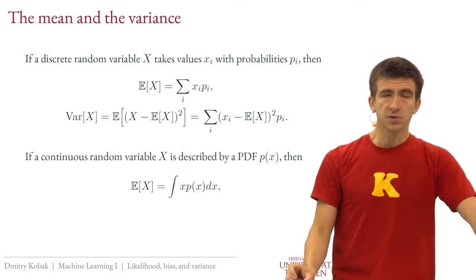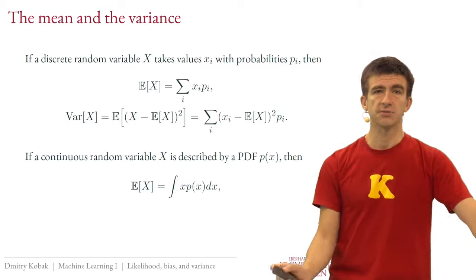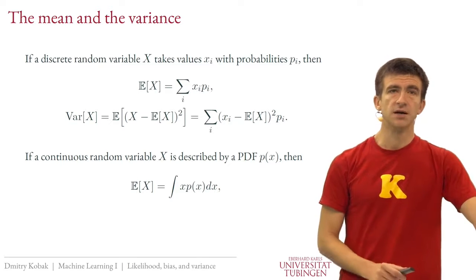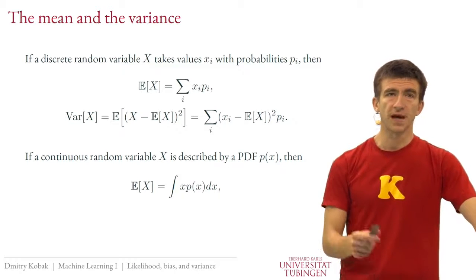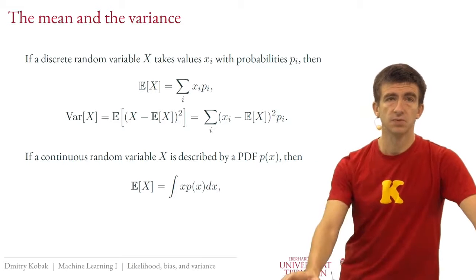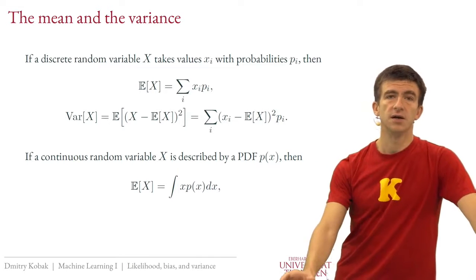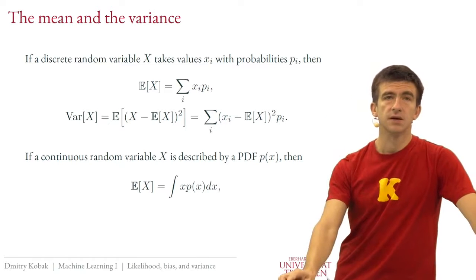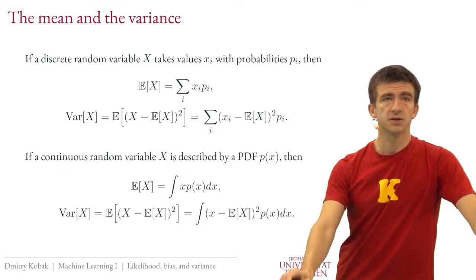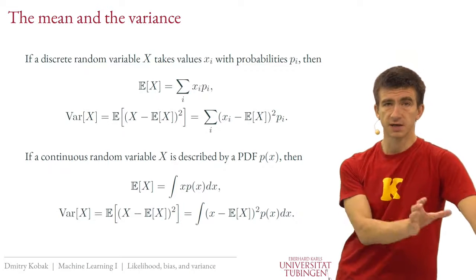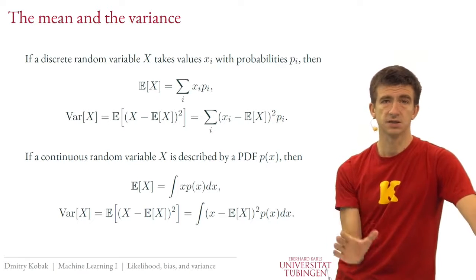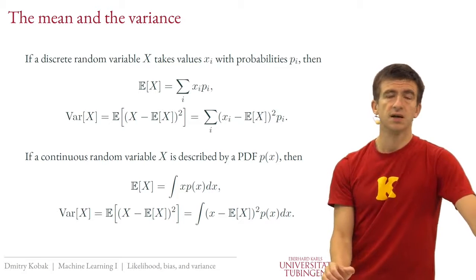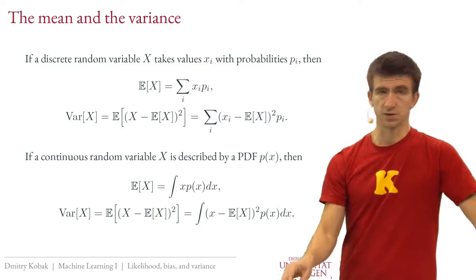For a continuous random variable it's very similar, but you replace all sums with integrals. To compute the expected value, it's the integral of x times the probability density p. For the variance, the conceptual formula — the expected value of the squared deviation from the expected value — stays the same as a general definition for any random variable. For continuous variables, we again use an integral.